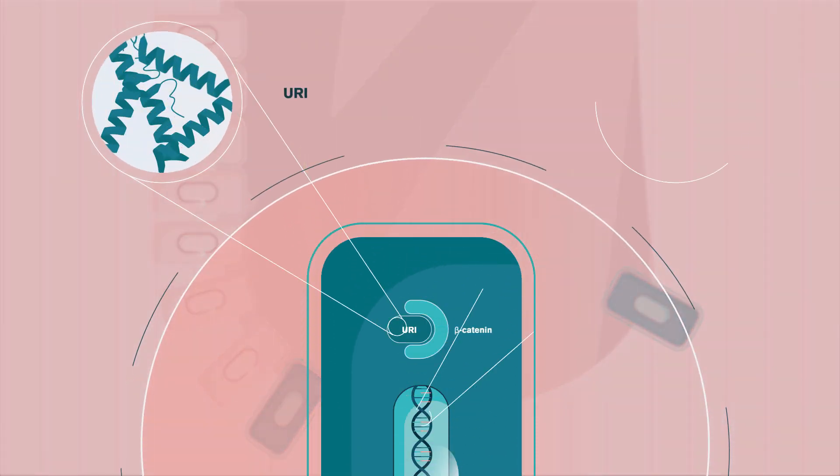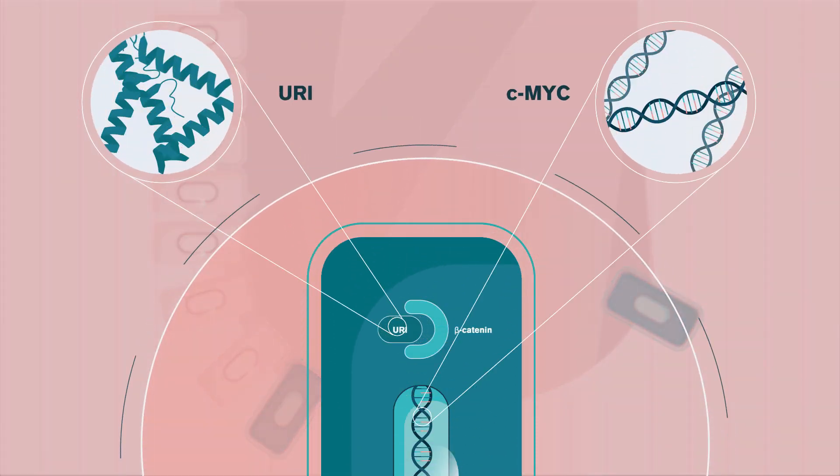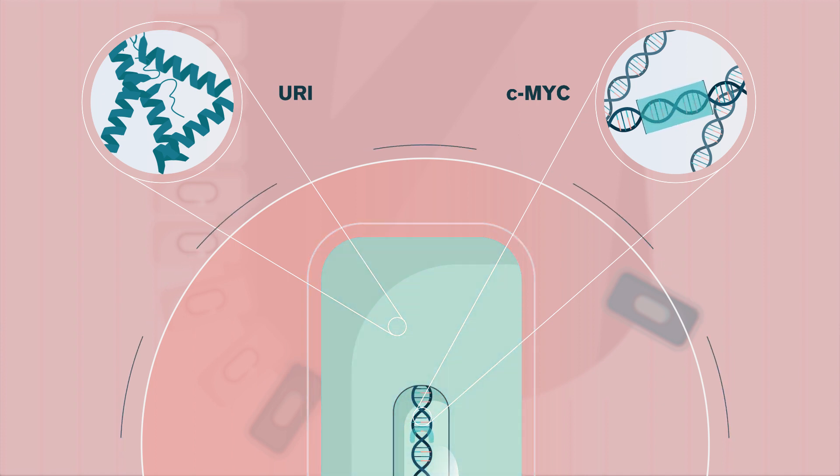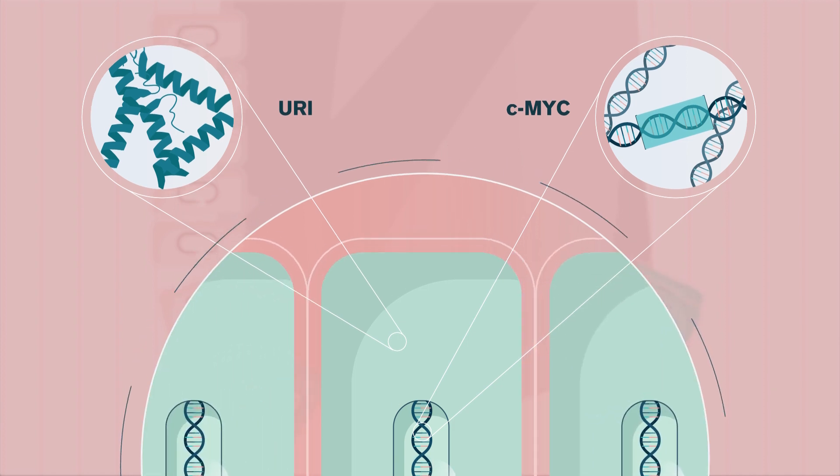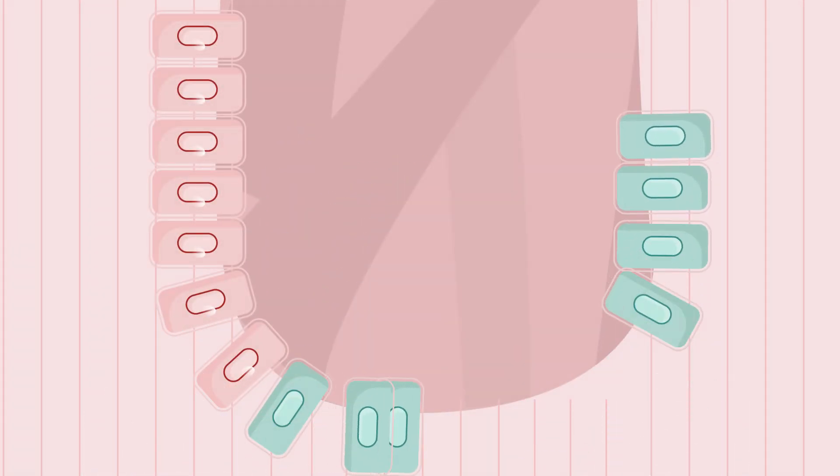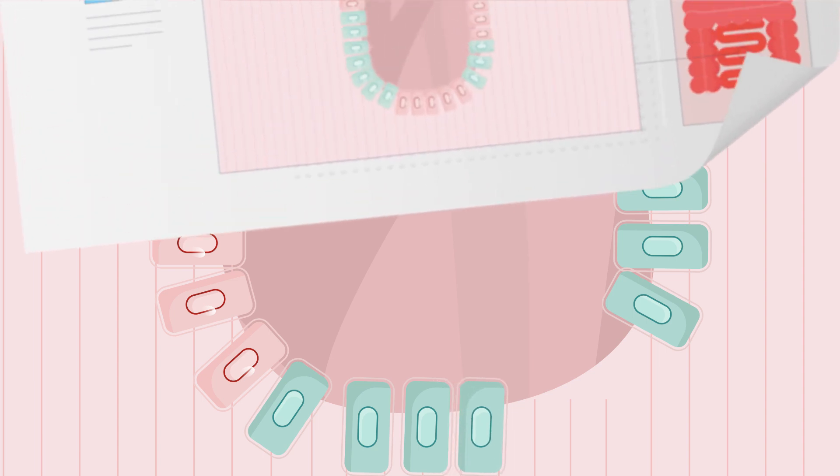To start the regeneration and repair the damage induced by irradiation, the dormant cells that have survived reduce their levels of URI and activate CMYK, which brings them out of their lethargy and makes them divide rapidly to repair the damaged intestine.